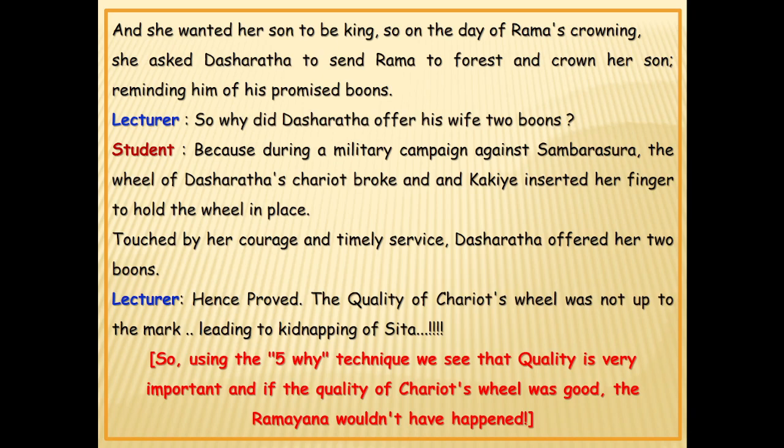What is the root cause of this episode? The quality of the chariot's wheel was not up to the mark, leading to Rama being sent to the forest and the kidnapping of Sita by Ravana. So using the YY technique, we see that quality is very important. If the quality of the chariot's wheel had been good, the Ramayana wouldn't have happened.